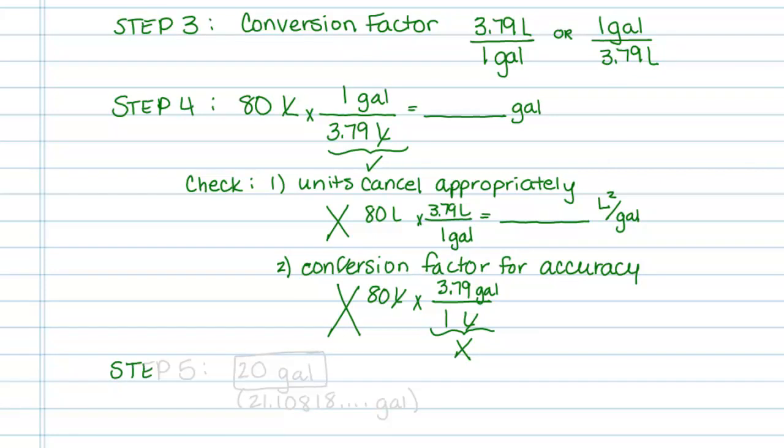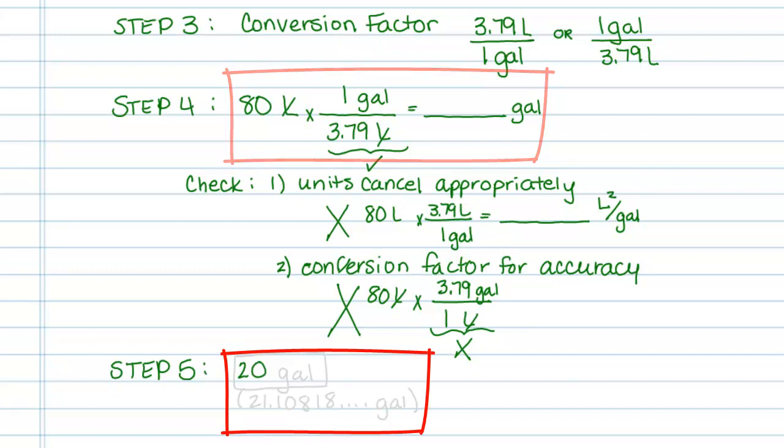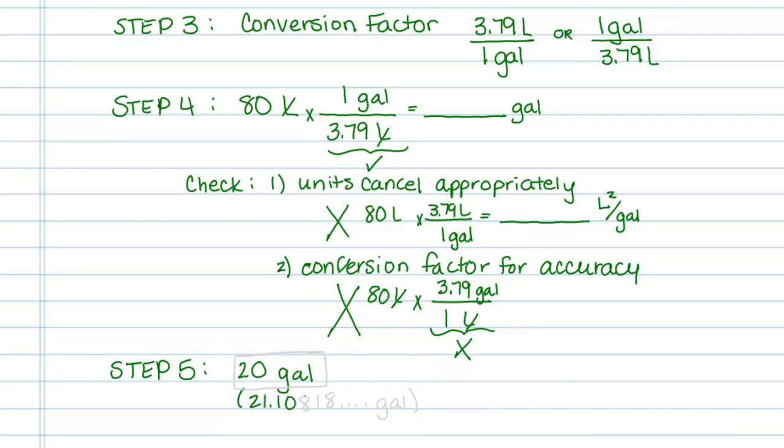So after you set up, step 5 is to solve. In this case, everything across the top you would multiply, and everything in the denominator you'd divide. So for this, in my calculator, I would have 80 divided by 3.79, which would give you 20 gallons. Now the calculator answer is actually 21.10818, et cetera, gallon.